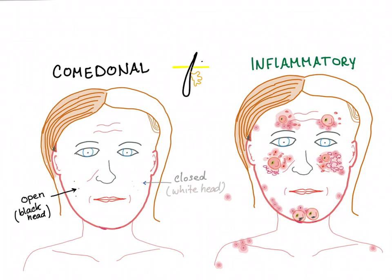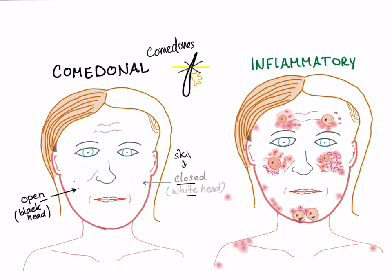In comedonal acne, the problem is a clog in the hair follicle or pore caused by dead skin debris or oil. This leads to the appearance of pimples or comedones, which come in two types: open comedones, called blackheads, and closed comedones, called whiteheads, which are closed with skin debris.